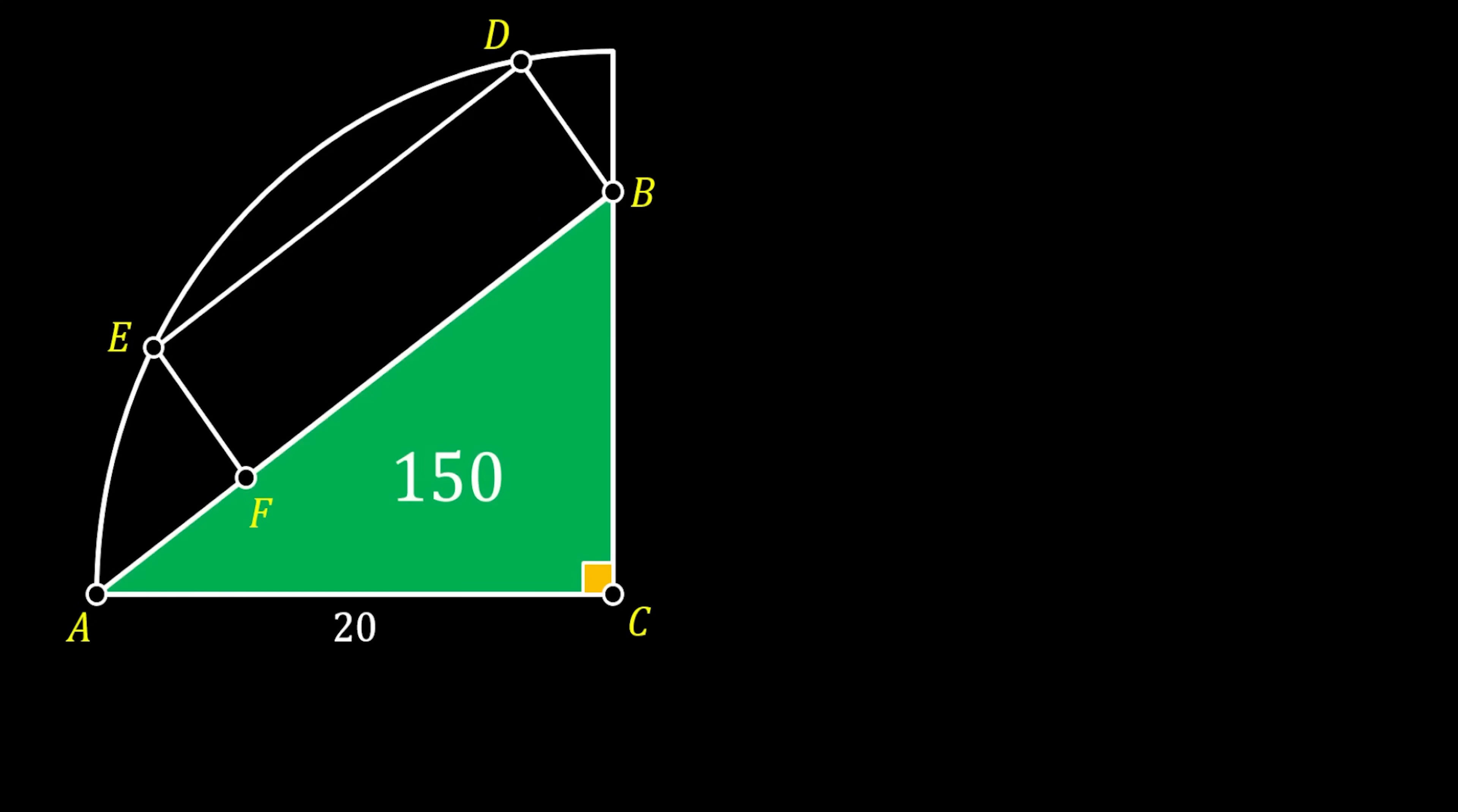So, we are going to start by labeling all the vertices of our triangle as A, B, and C, and we will label the remaining vertices of our rectangle as D, E, and F. Now, let's notice that this is a quarter circle. So, this means that our triangle ABC is actually a right angle triangle.